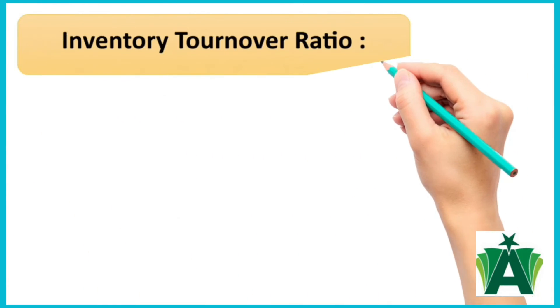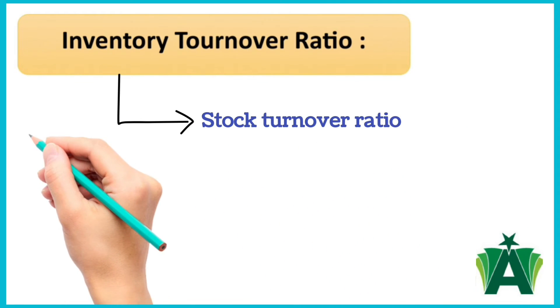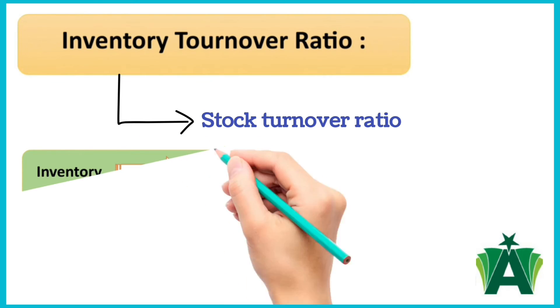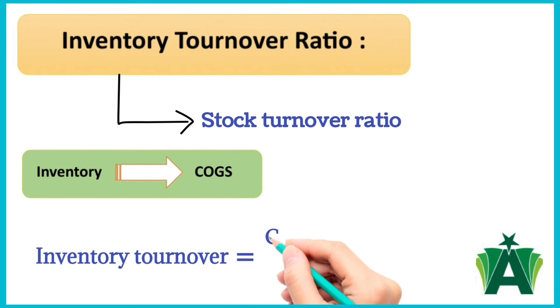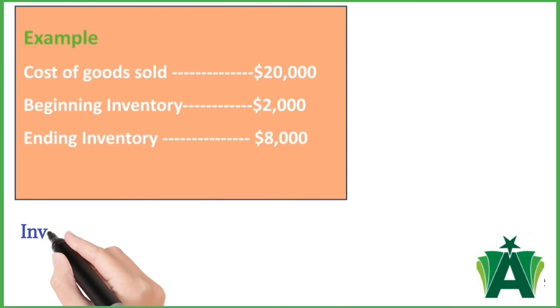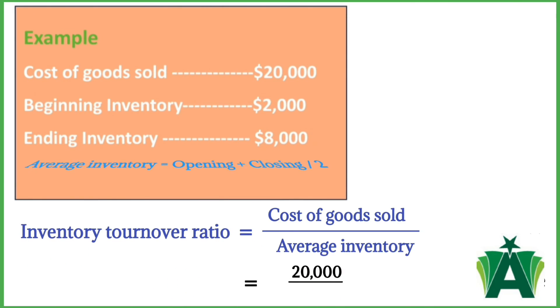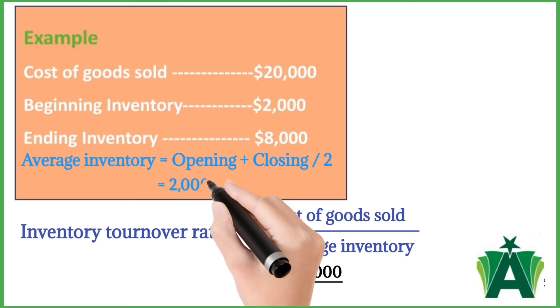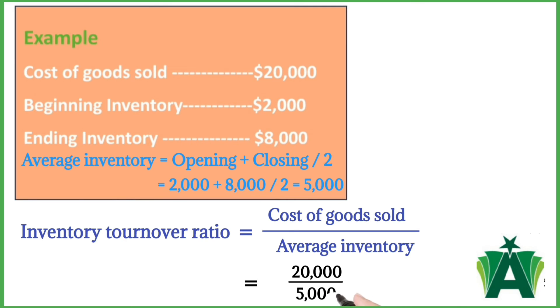The Inventory Turnover Ratio, also known as the stock turnover ratio, is a financial ratio that measures how many times a company turned over its inventory relative to its cost of goods sold in a given period. It is calculated as cost of goods sold divided by average inventory. The cost of sales is $20,000. Average inventory is calculated as beginning inventory of $2,000 plus ending inventory of $8,000, divided by 2, giving $5,000. The inventory turnover ratio is 4 times.